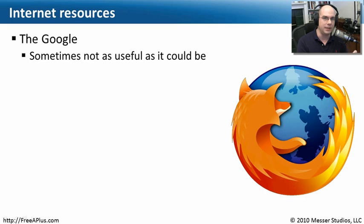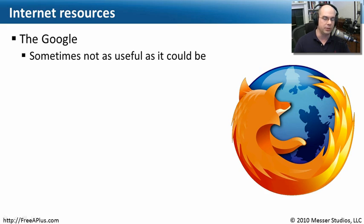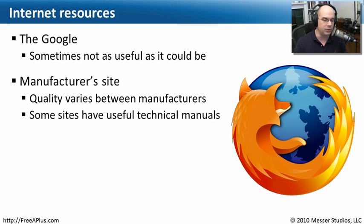You may want to learn more about Google's search options. For instance, if you type a search term like 'memory' and then add 'site:dell.com', it will only look for the word memory on the Dell website. These little tricks can really help you find detailed information. The manufacturer's website is almost always going to have what you're looking for at a specific hardware and software level.